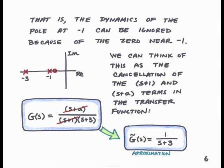When the coefficient a is close to 1, this means the zero of the transfer function is close to minus 1 — that is, the zero is very close to the pole. In this case, the dynamics of the pole at minus 1 can be ignored. You can think of this as a cancellation of the (s + 1) term in the denominator with the (s + a) term in the numerator. That gives an approximate transfer function, G̃, as 1/(s + 3). So our G(s) acts like this lower-order transfer function G̃ in this case.